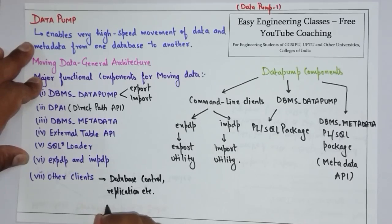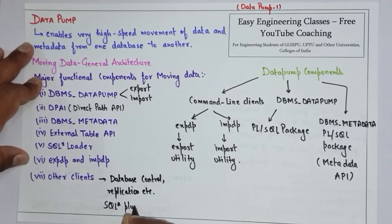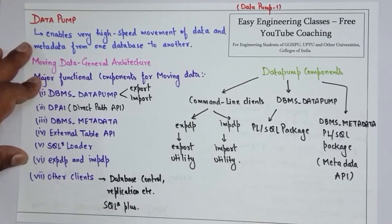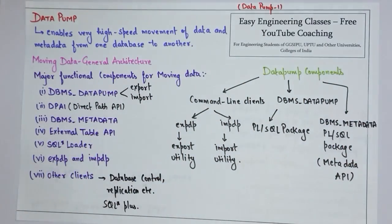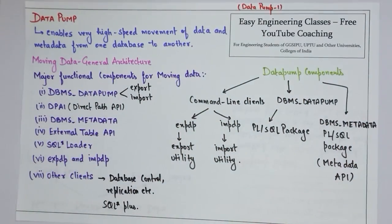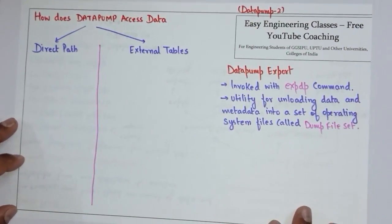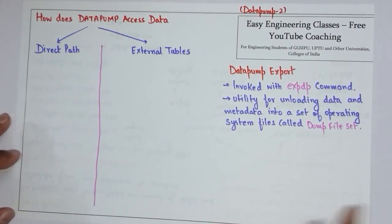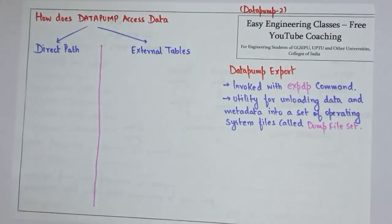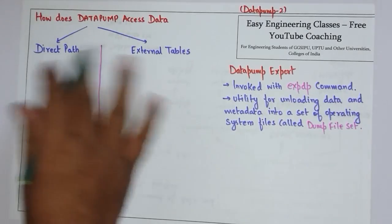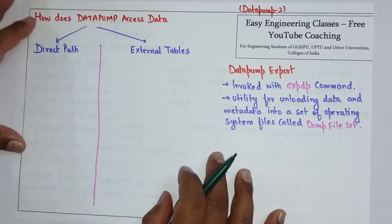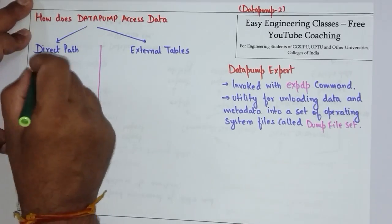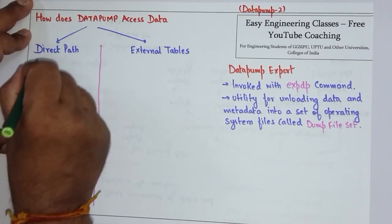You can also use SQL*Plus within Data Pump. So these are the components of Data Pump. The next topic is how Data Pump accesses data. There are two different paths or processes by which Data Pump can access data — the first is Direct Path.